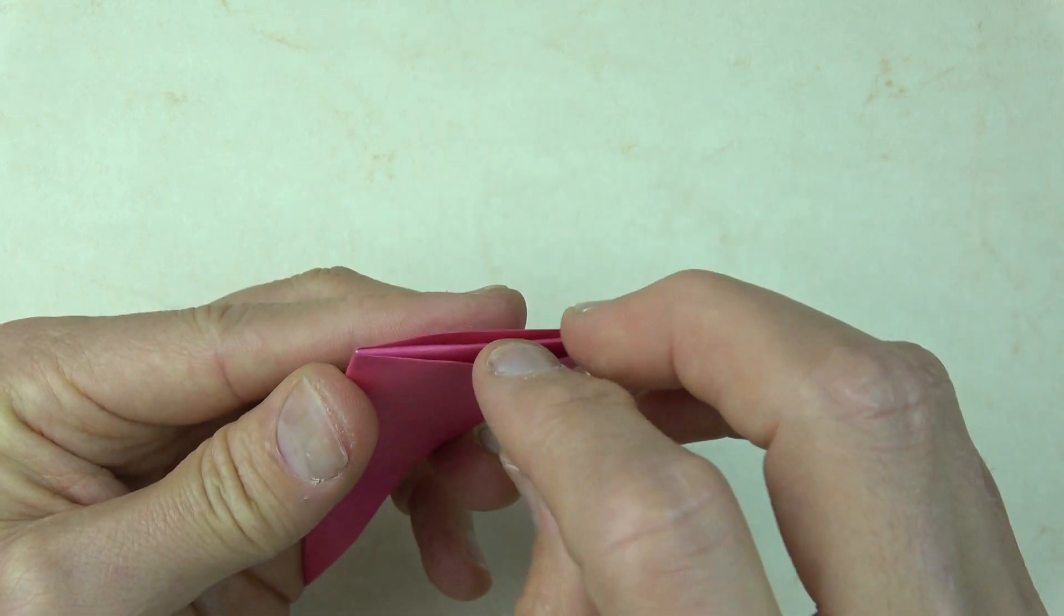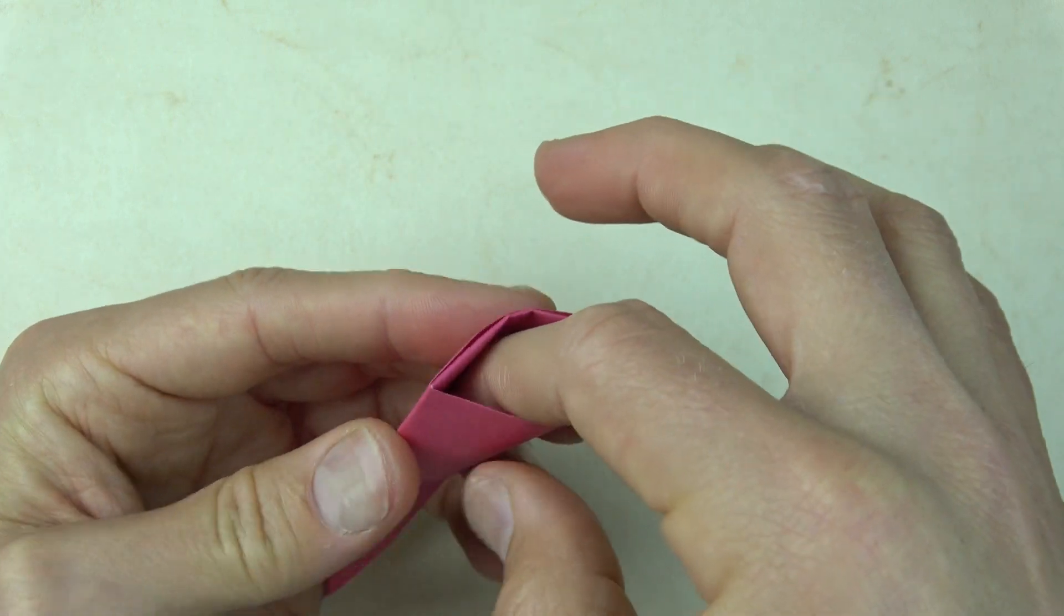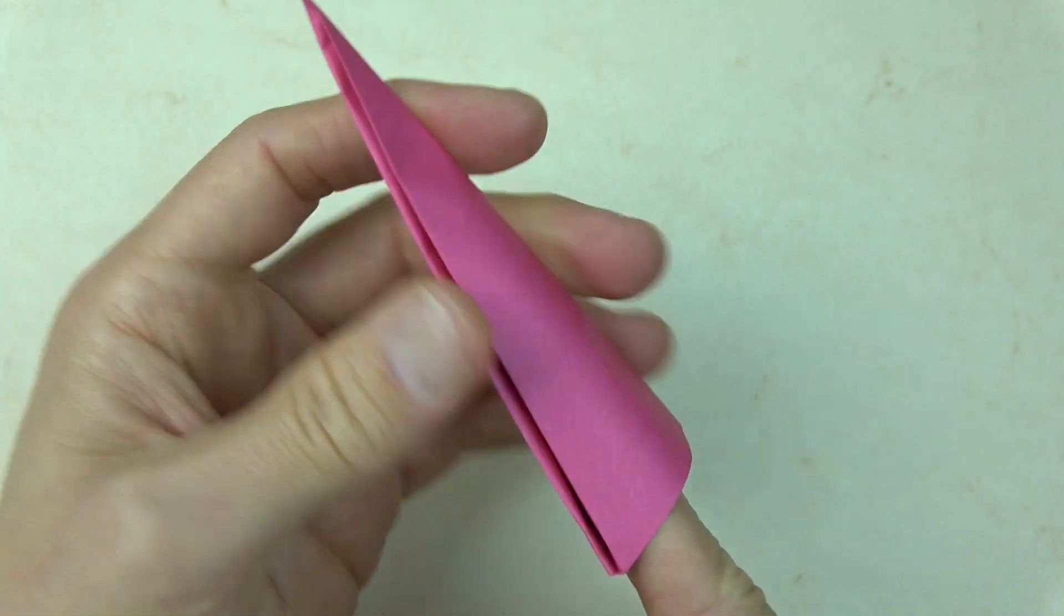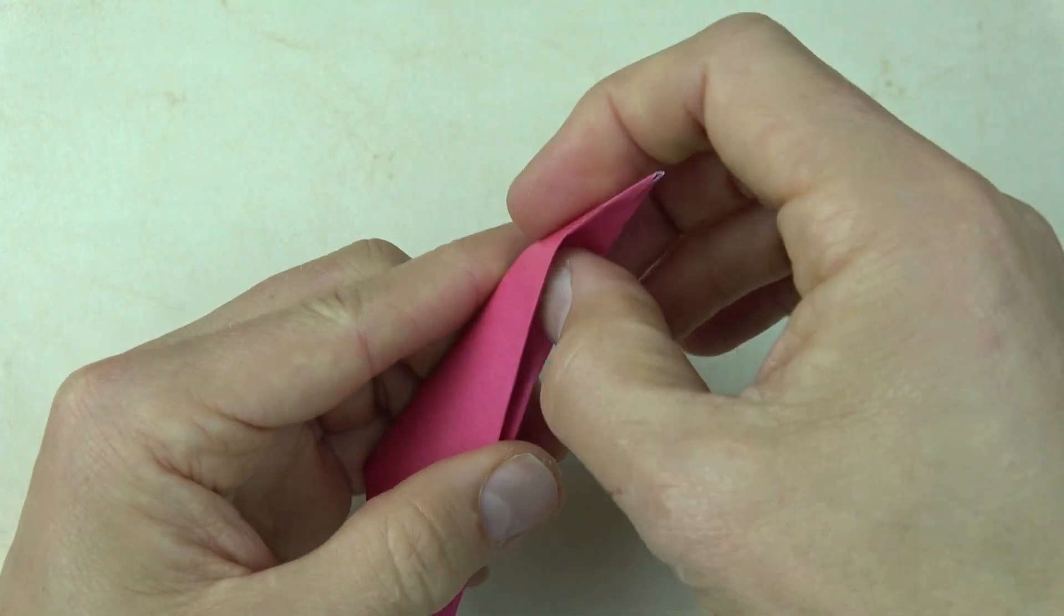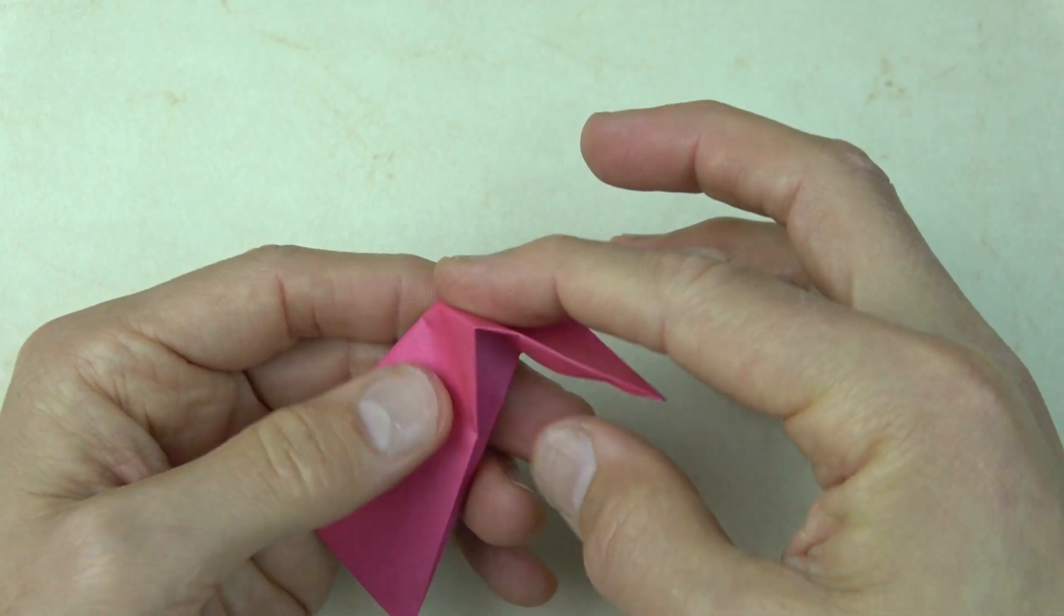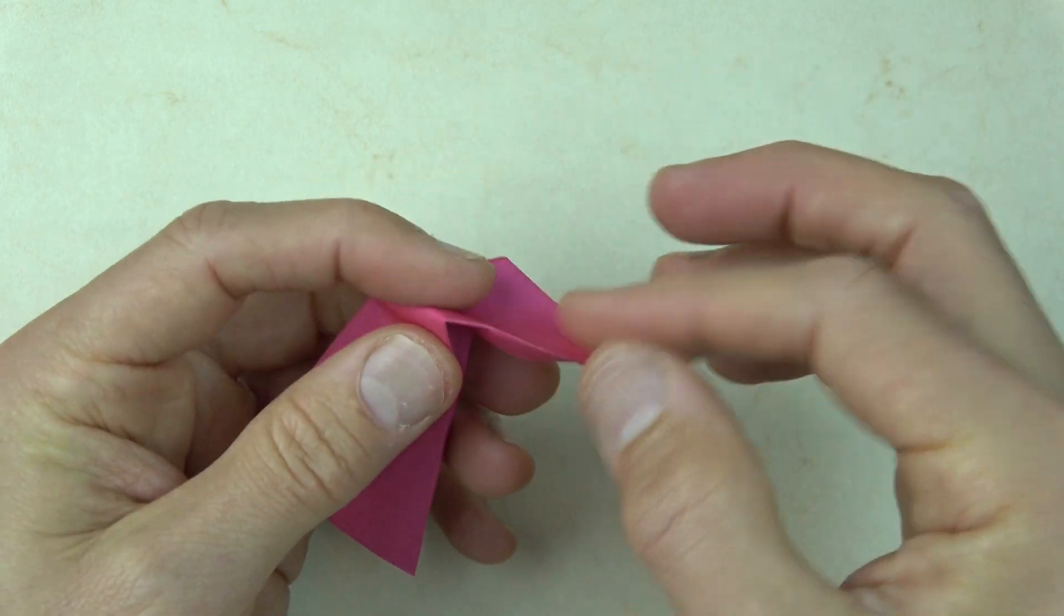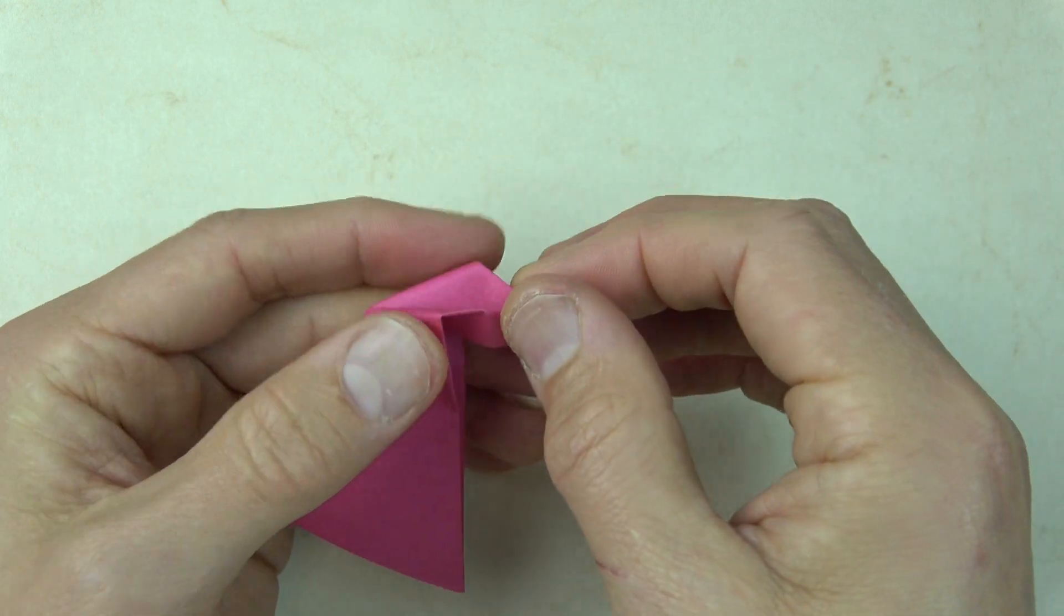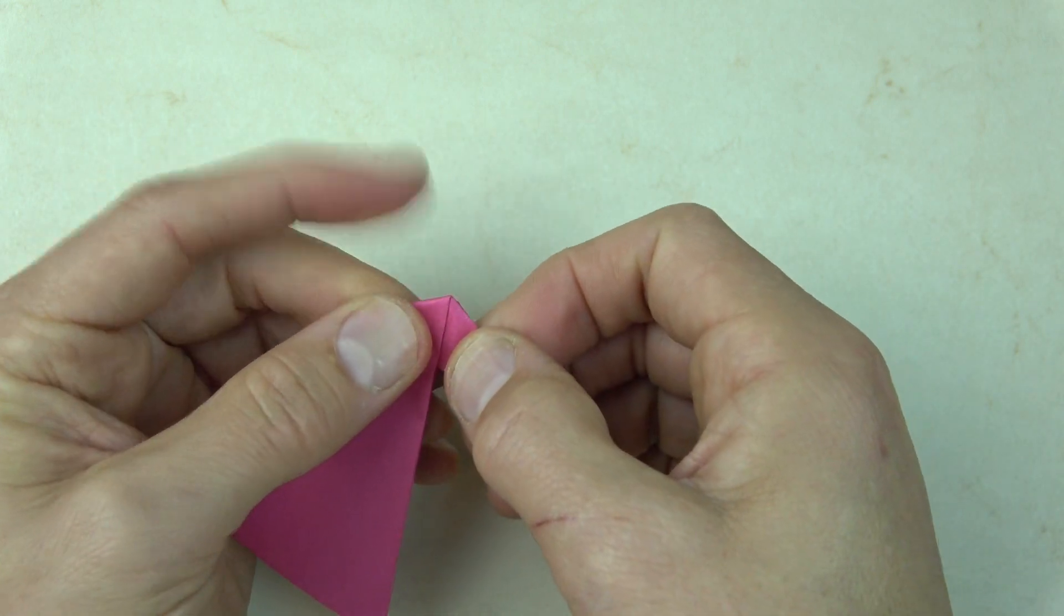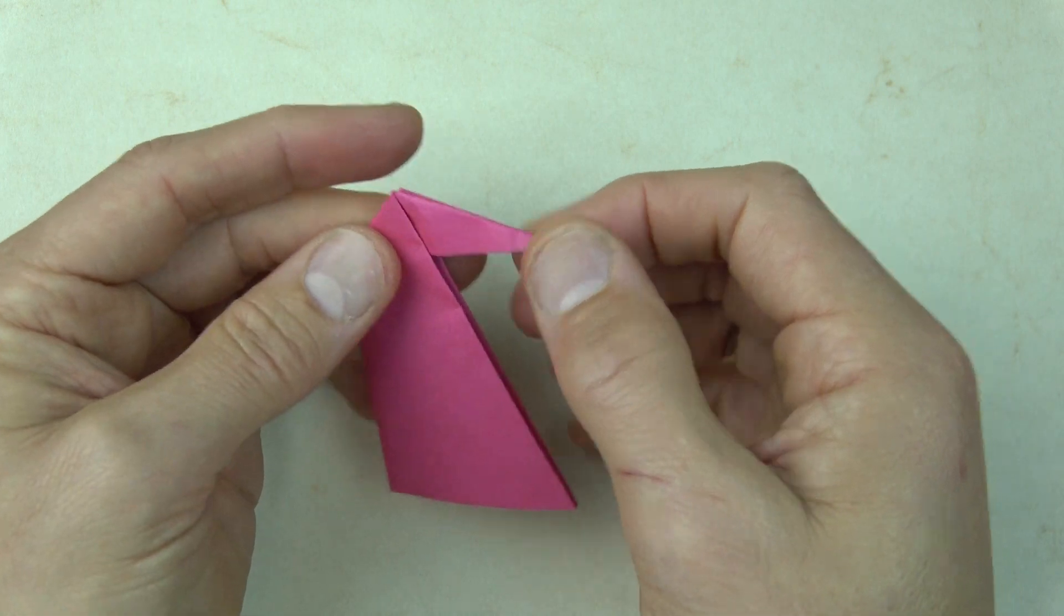And now open the front pocket. And that's where you can put your finger in. And we're just about done. We just need to make a reverse fold on the head. So open here and push the head down to however big you want it. And bring these two edges together. And there it is.